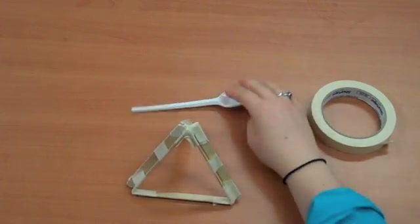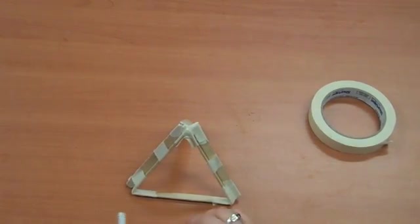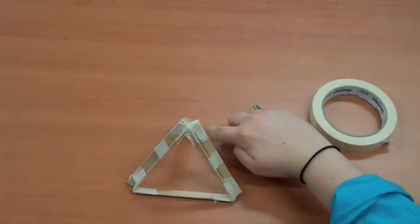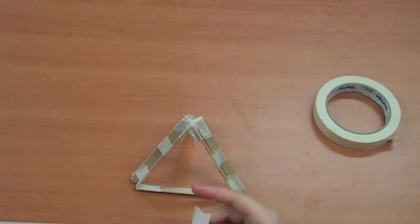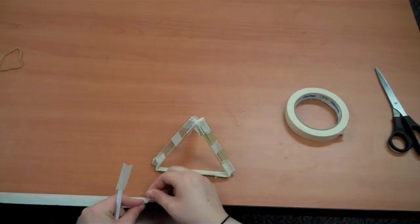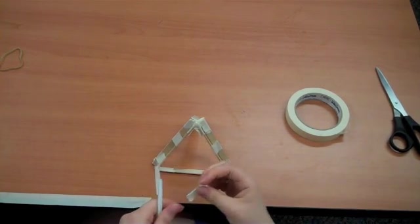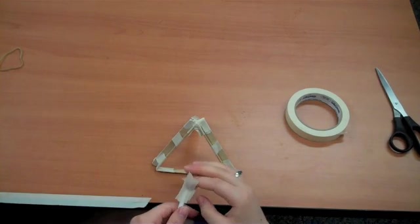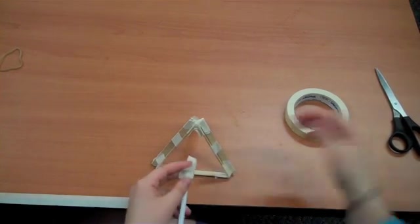Then we need to connect our spoon. Our spoon is going to go right in the corner. I like to put one piece of tape on top and one piece of tape on the bottom and then sort of split them like you're opening your arms for a hug.